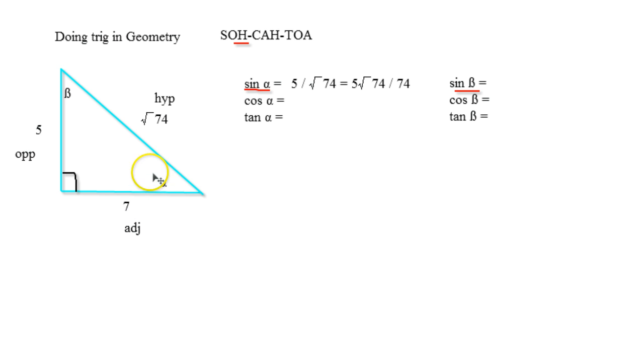Now cosine is going to be adjacent over hypotenuse. So adjacent is right here, hypotenuse is right there. So that is going to be 7 divided by root 74, which we can't have. So we need to multiply top and bottom by root 74. So this is 7 root 74 divided by 74. And if you use Pythagorean theorem, you'll see I'm correct on this.